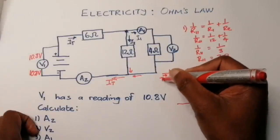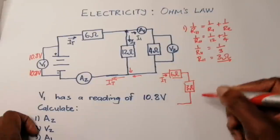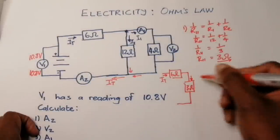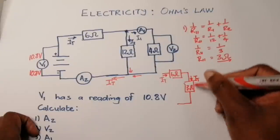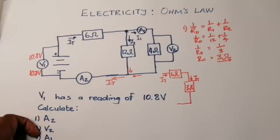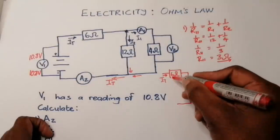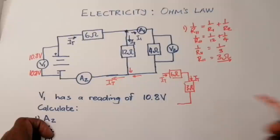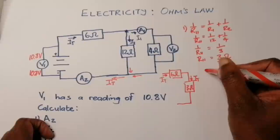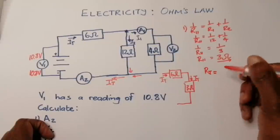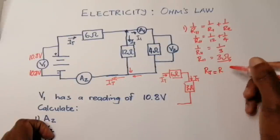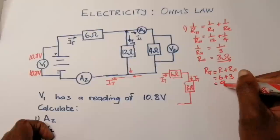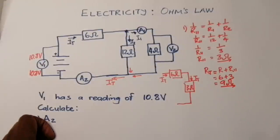The total current passes across the 6 ohm resistor, and when we combine the parallel resistors into one, the total current also passes through the 3 ohm resistor. Since the same current passes through both, they must be in series. Therefore, R_total equals 6 plus 3, which gives 9 ohms — the effective resistance of the entire circuit.